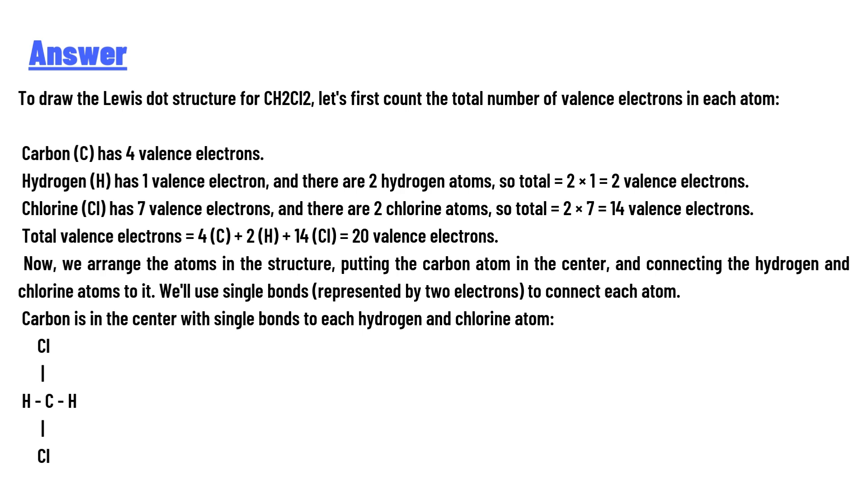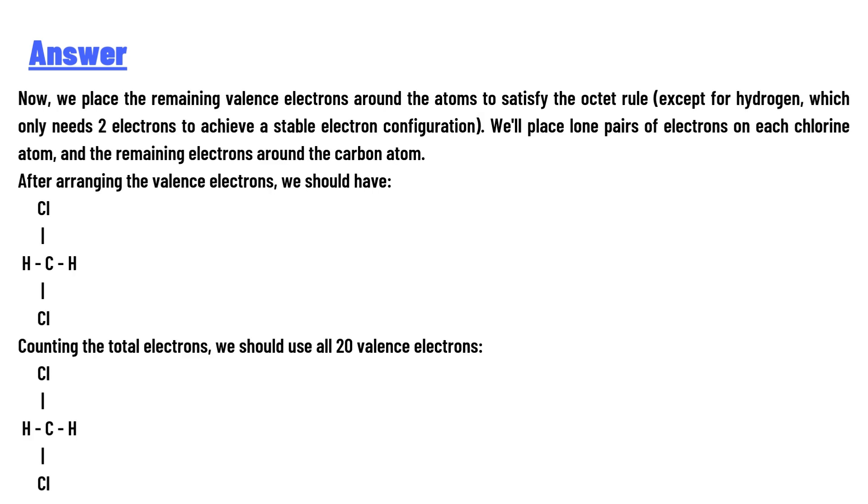Now we place the remaining valence electrons around the atoms to satisfy the octet rule. Hydrogen only needs two electrons to achieve a stable electron configuration. We will place lone pairs of electrons on each chlorine atom with the remaining electrons.